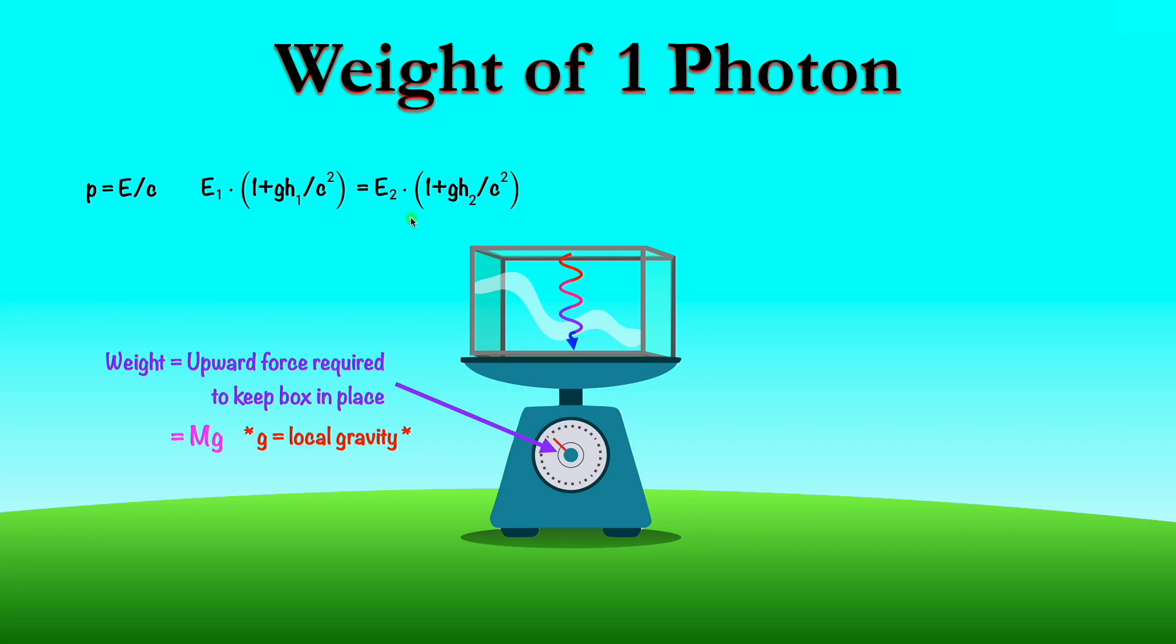So at the top of the box and the bottom of the box, these two quantities have to be equal. And this holds assuming that g is constant, it's the same everywhere in the box, so locally.